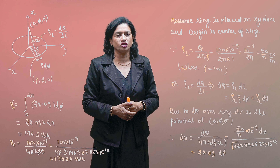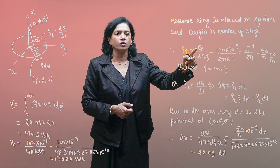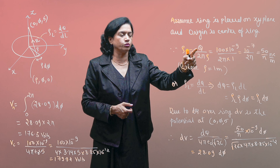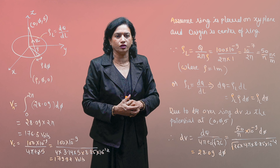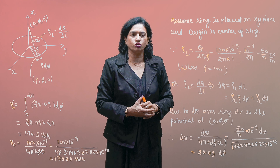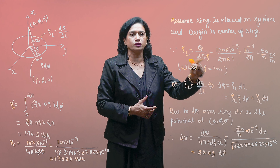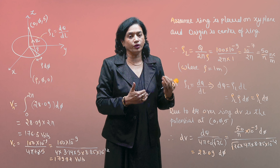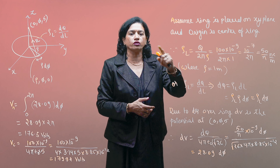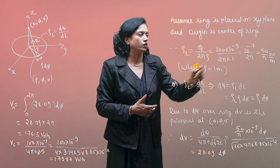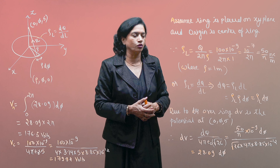Now I have to define the ring in terms of line charge density. If the whole ring carries charge Q, divided by its circumference will give me the line charge density. Q is 100 × 10⁻⁹ coulombs divided by 2πρ, where ρ is the radius of the ring. Using cylindrical coordinates, with radius 1 meter, this gives 50/π nanocoulombs per meter.